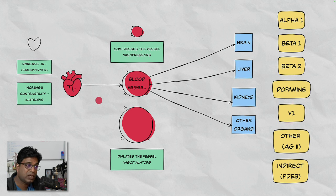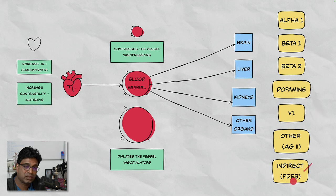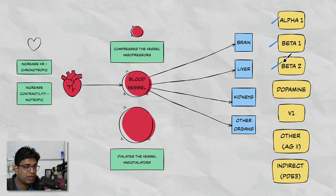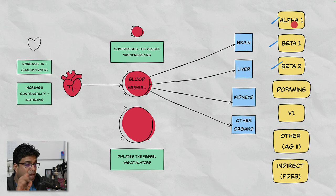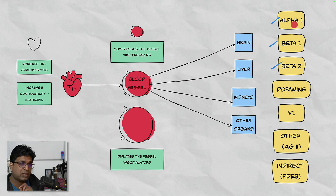Once we understand these two classes, let's look at what receptors they act on. Basically we have alpha-1 receptors, beta-1 receptors, beta-2 receptors, dopamine receptors, vasopressin V2 receptors, and indirect receptors such as phosphodiesterase-3 receptors. The most commonly used are alpha-1, beta-1, beta-2, dopamine, and vasopressin receptors. I'm skipping receptors that have no known clinical significance — we're discussing only those necessary for clinical practice.